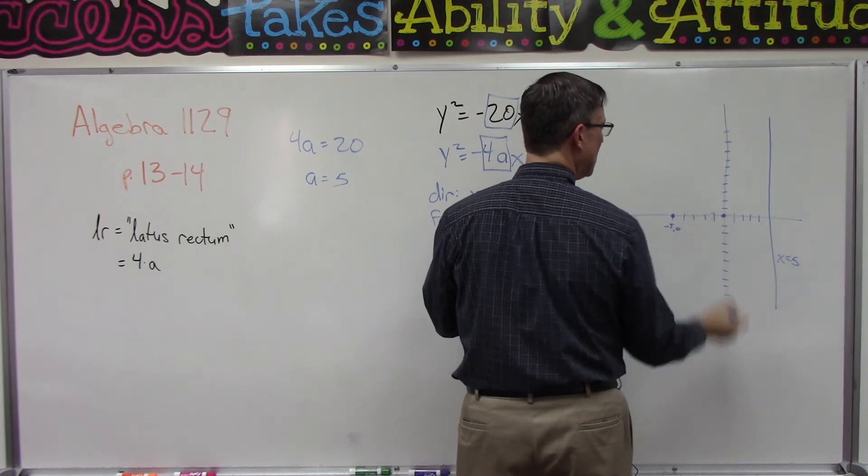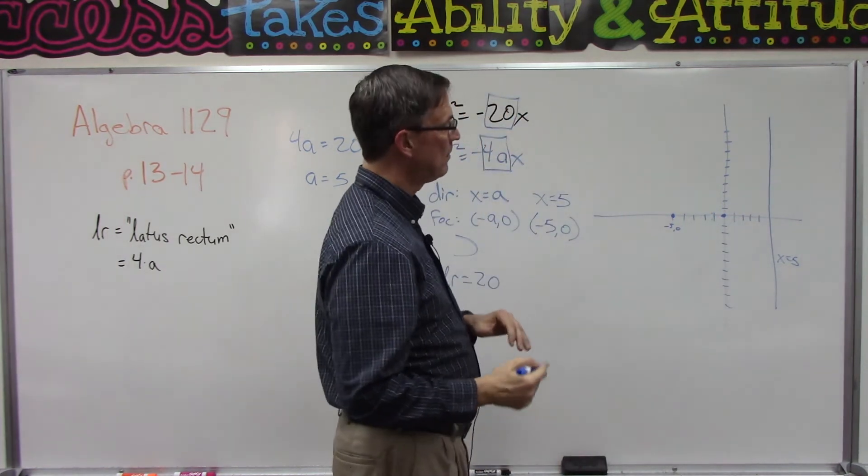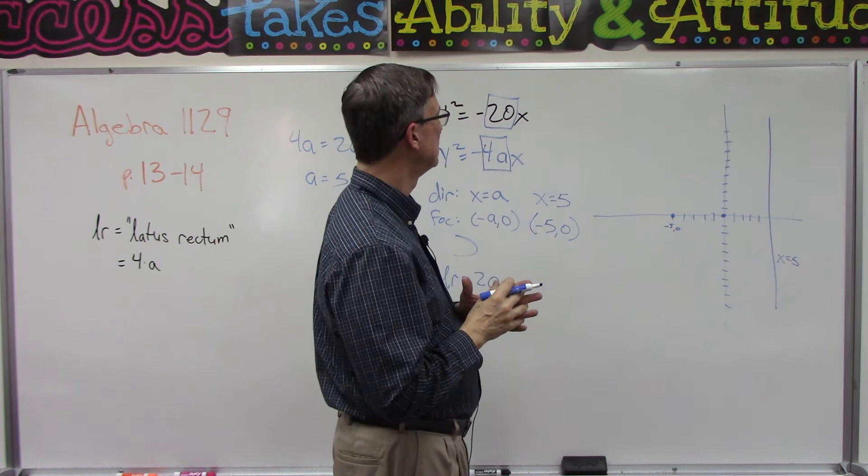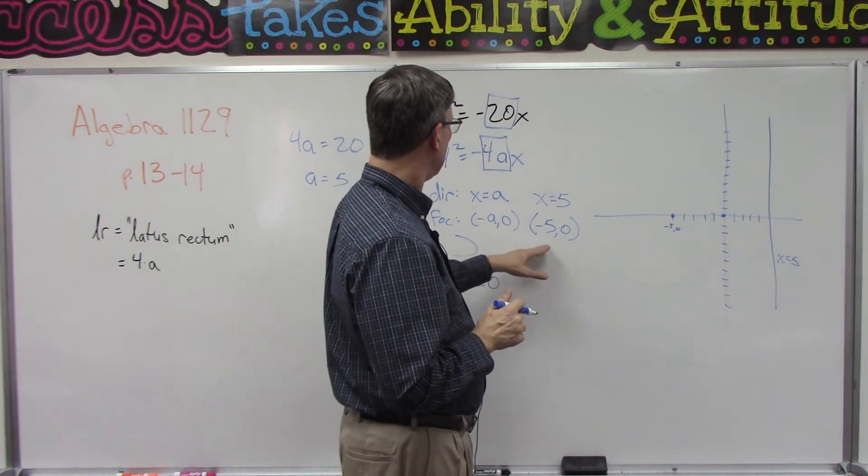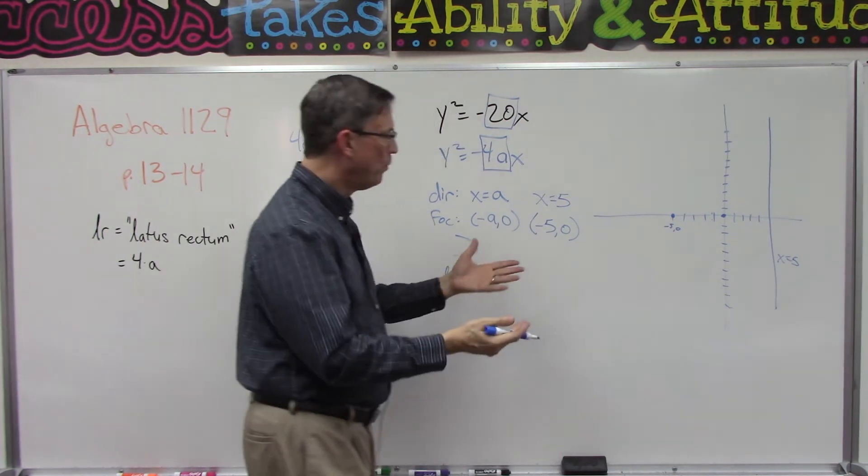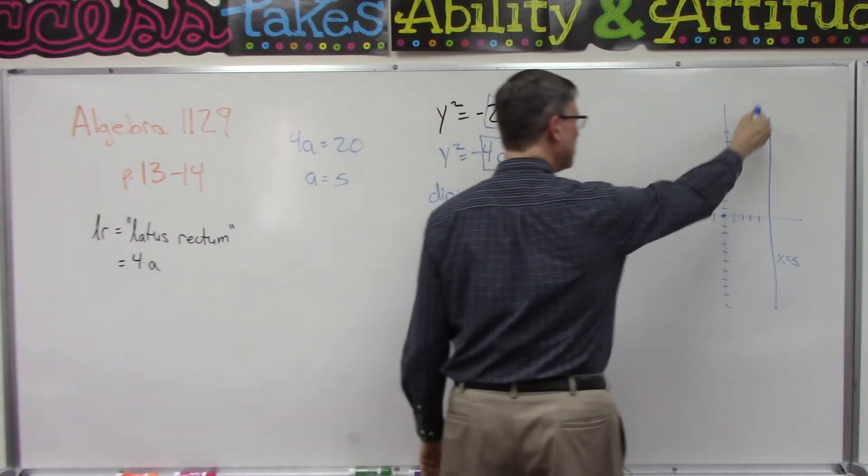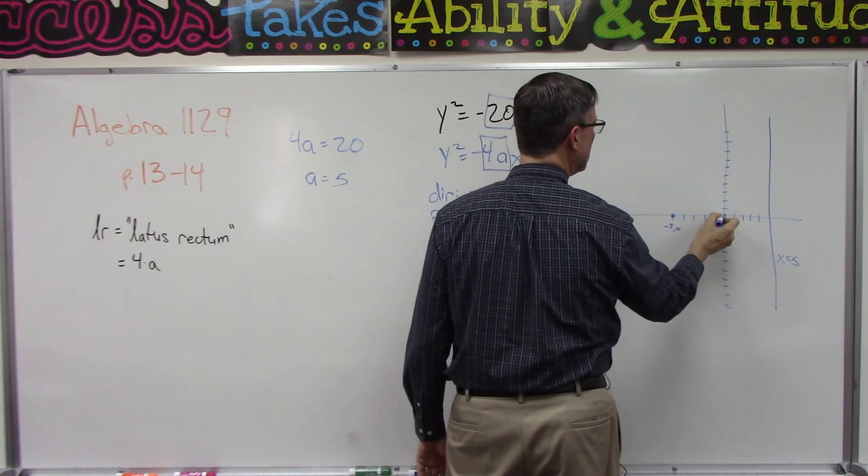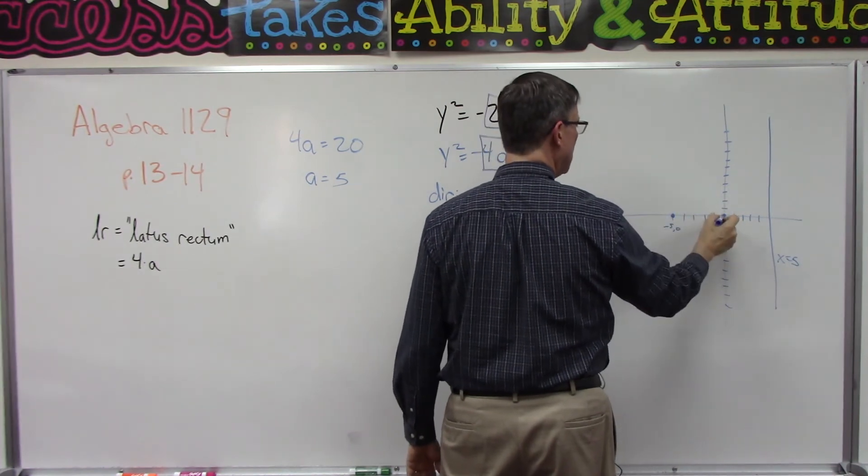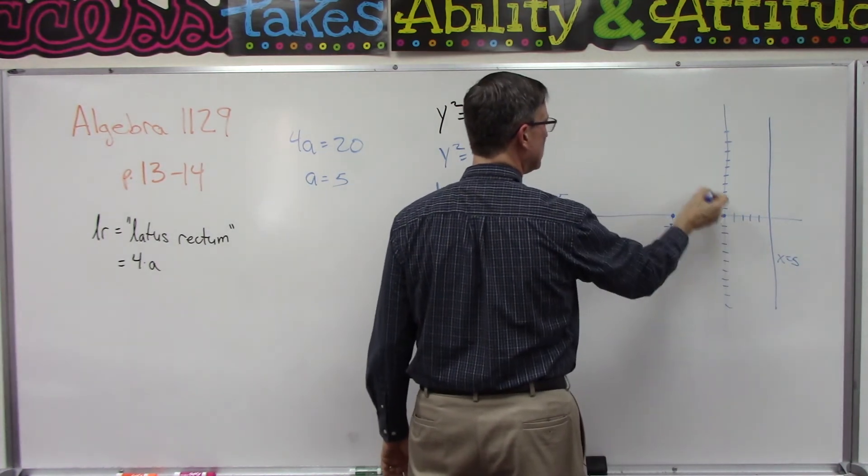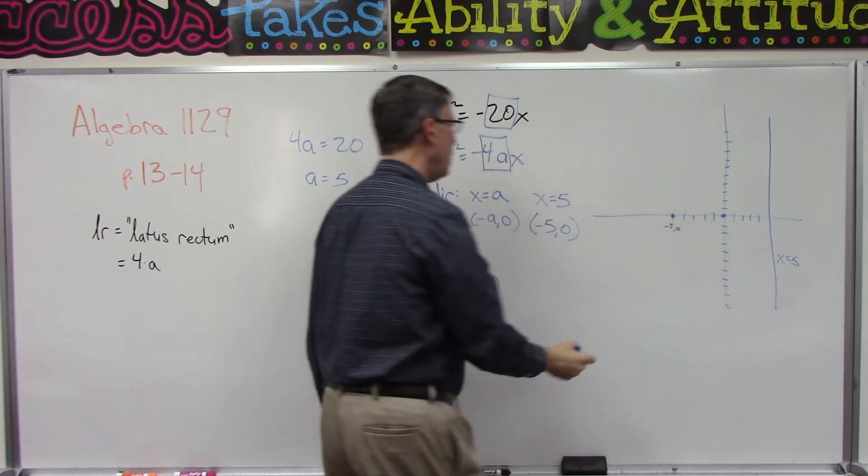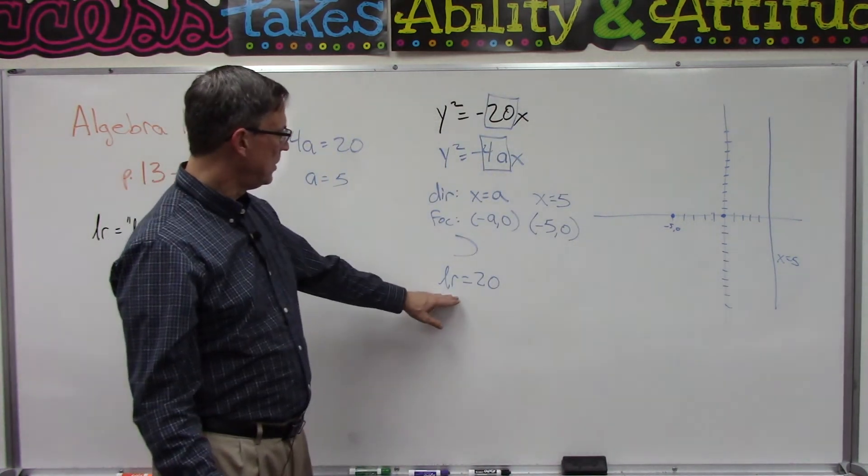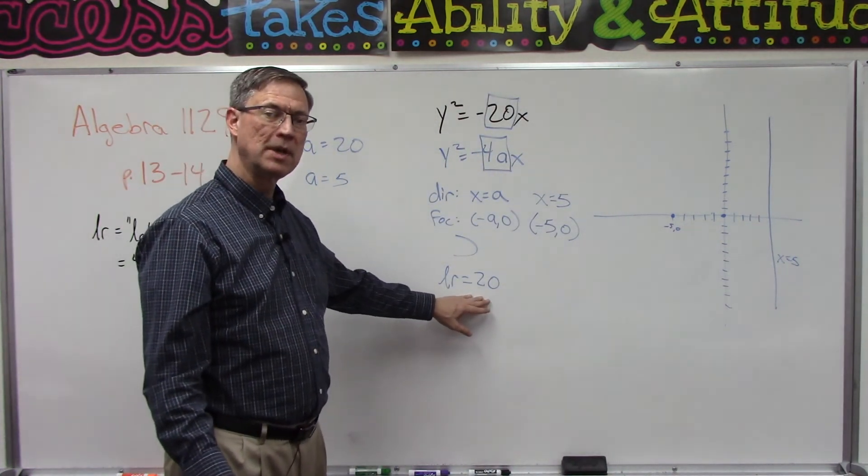This is the vertex, because we haven't done any type where the vertex is not at (0, 0). I know it's going to open to the left, and we can kind of see that because this is our directrix line. So it's going to start here and kind of go like this—we know it's going to come this direction.